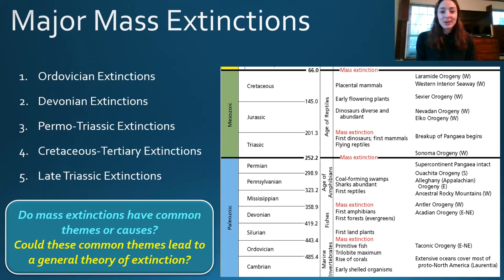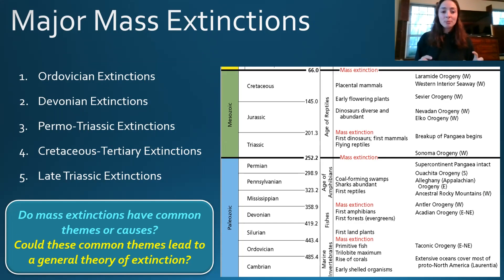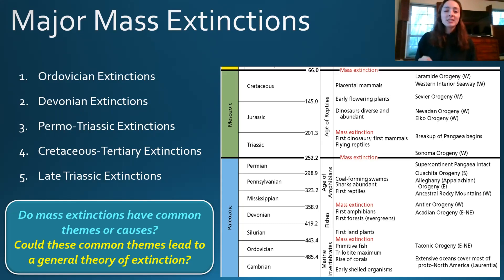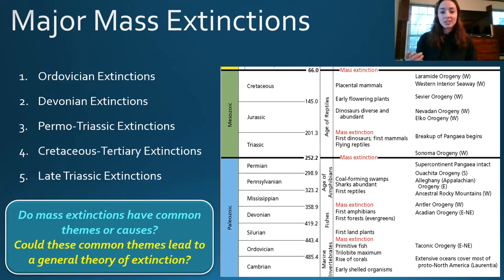Now getting to the mass extinctions. The Big Five include the Ordovician, the Devonian, the Permo-Triassic, the Late Triassic, and the Cretaceous-Tertiary extinctions. In the figure to the right, showing a timescale from the Paleozoic to the Mesozoic, we can see the first mass extinction in the Late Ordovician going into the Silurian, then the Devonian to Mississippian extinction, then the Permo-Triassic, the Late Triassic, and the Cretaceous-Tertiary extinction.